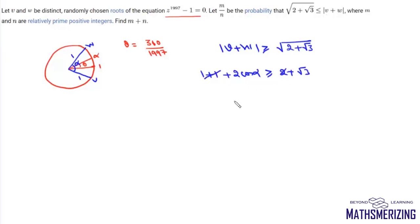Now 2 and 2 will cancel, so from here we get the condition that cos alpha is greater than or equal to root 3 by 2. From here we can say the value of alpha should lie between 0 and 30 degrees.